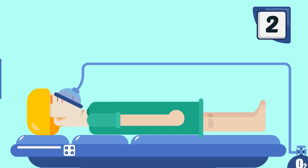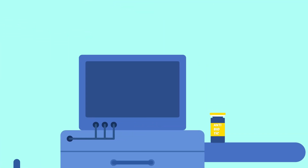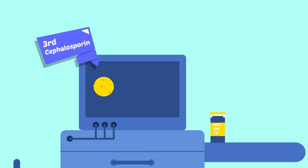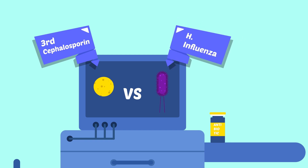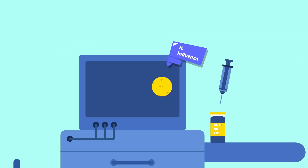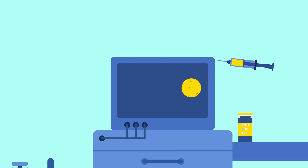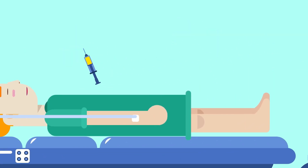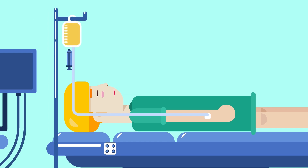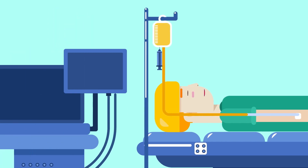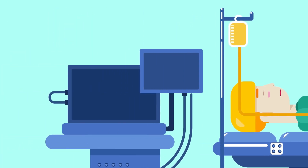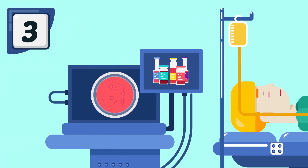2. Antibiotics: Ampicillin or 3rd generation cephalosporin are effective against H. influenzae and are given by parenteral route — IM or IV — without waiting for results of throat swab and blood culture.